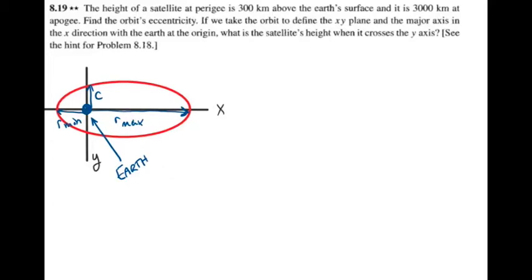First, remember that we have to add the radius of the Earth to the height to find the actual minimum and maximum radii. So the minimum radius is 300 kilometers plus the radius of the Earth, which is 6.4 times 10 to the 6th meters, for a total of 6.7 times 10 to the 6th meters for the minimum radius.